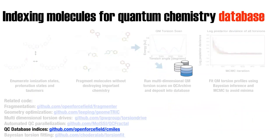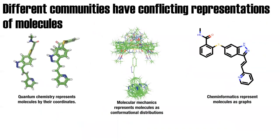I will talk about indexing molecules for the quantum chemistry database. Different communities in computational chemistry have different representations of molecules. In the quantum chemistry community, molecules are represented as XYZ coordinates and elements — there's no connectivity, and each conformation is generally considered another molecule. In the molecular mechanics community, molecules are thought of as a conformational distribution where all conformations are the same molecule. In cheminformatics, it's just a graph.